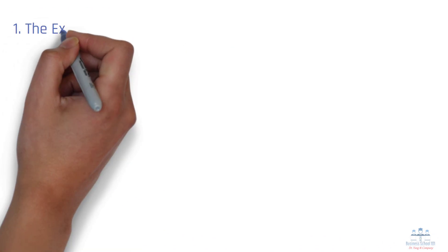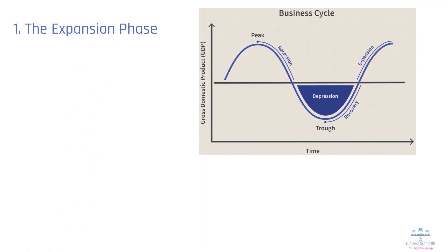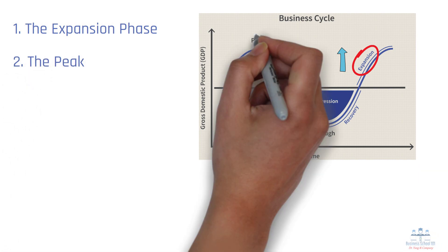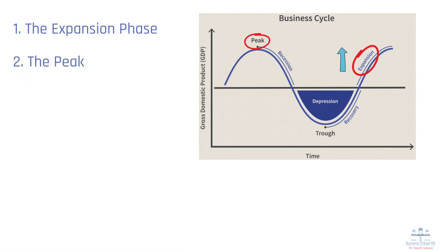Number 1: The expansion phase. During this phase, things are looking up. Production is increasing, more people are getting jobs, and incomes are rising. It's like the economy is firing on all cylinders. Number 2: The peak. This is when the party ends, we reach what economists call a business cycle peak. It's the highest point before things start turning south.